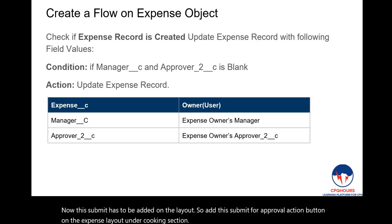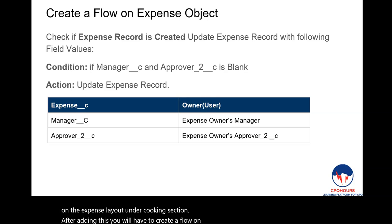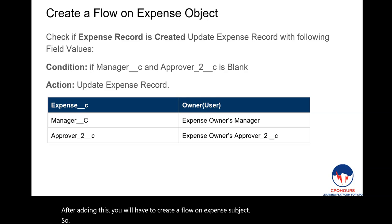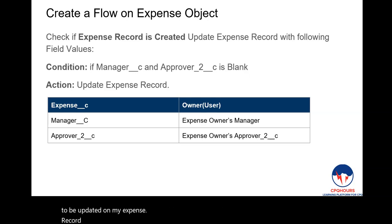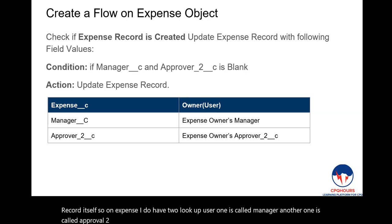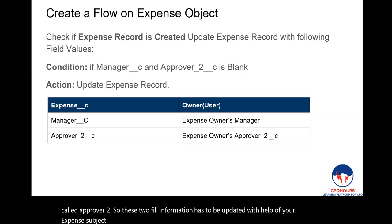After adding the button, create a flow on the Expense object. When a sales rep creates an Expense record, the flow should update the Expense record with the expense owner's Manager lookup and the expense owner's Approver 2 lookup from the User object. The Expense object has two user lookup fields — Manager and Approval 2 — and these need to be populated automatically using a flow.